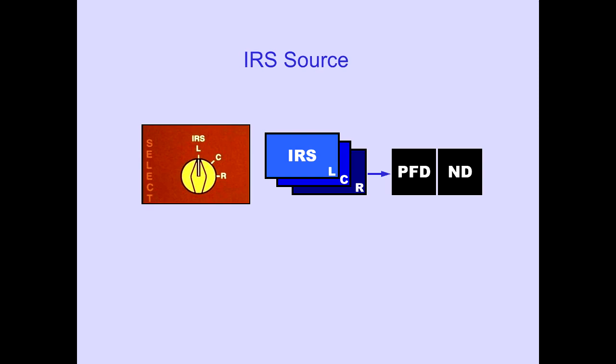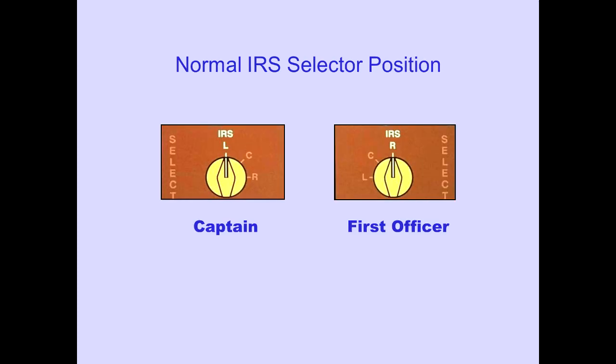The inertial reference system source selector is used to select which inertial reference unit provides inertial information to the PFD and ND. The left, center, or right IRS can be selected. When required, depending on system status, switching is automatic and independent of the source select switch position. Normally, the Captain's IRS selector is on the left source and the First Officer's selector is on the right source.